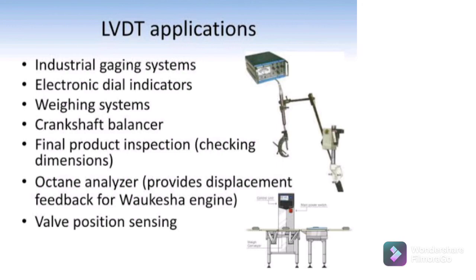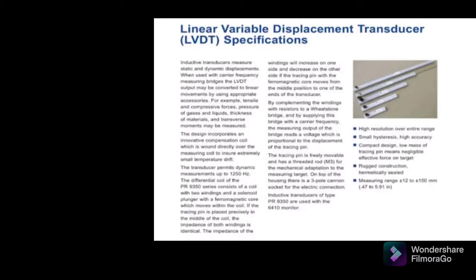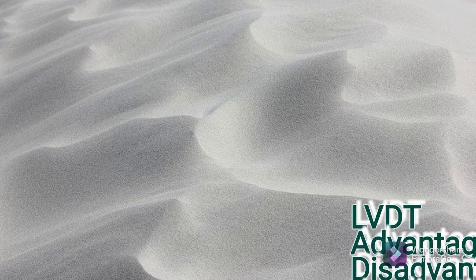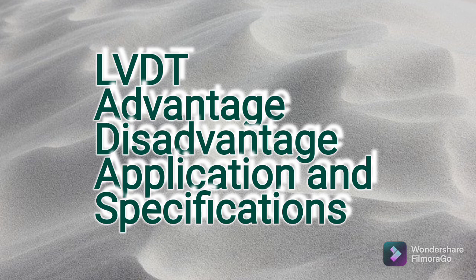Finally, we will talk about LVDT specifications. The range of measurement is plus or minus 0.25 millimeter to plus or minus 750 millimeter. The operating temperature range is minus 260 to 600 degrees Celsius. The last specification is frequency range — up to 500 Hz to 20 kHz. In this video we have learned about LVDT advantages, disadvantages, specifications, and applications.